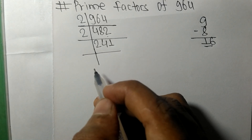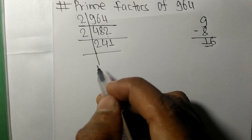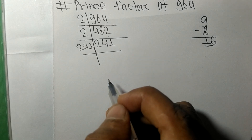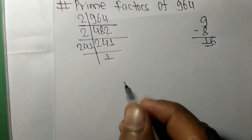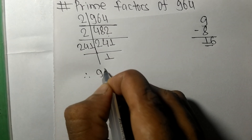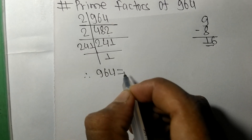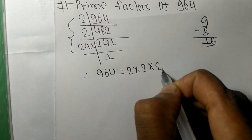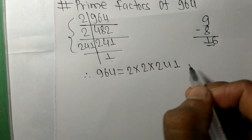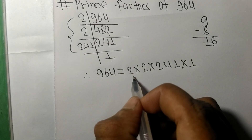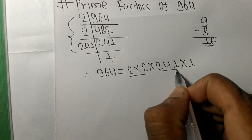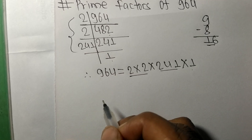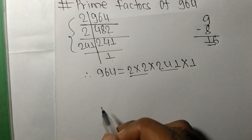Now we got 241, which is a prime number, so it is exactly divisible by 241 only, and on dividing we get 1. Therefore 964 = 2 × 2 × 241. So 2, 241, and 1 are the prime factors of 964.